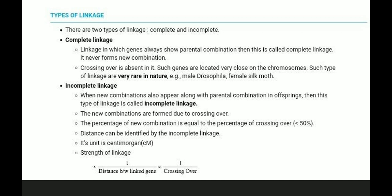Incomplete linkage means that two new combinations also appear along with the parental combination in offspring. This is because crossing over occurs between the genes. When new combinations appear alongside parental combinations, this type of linkage is called incomplete linkage.